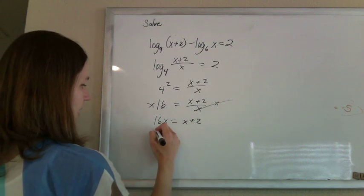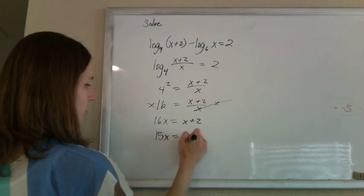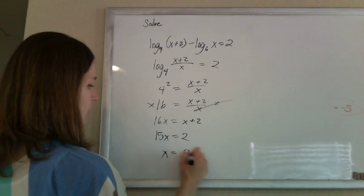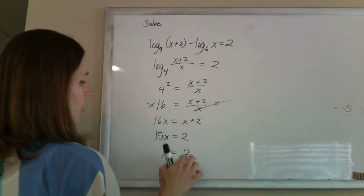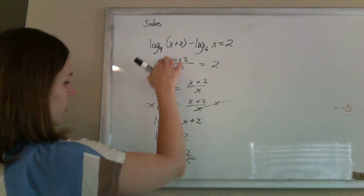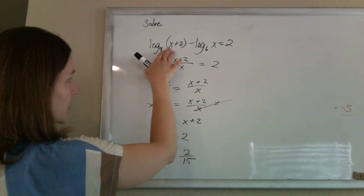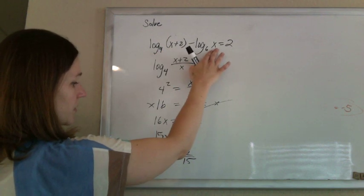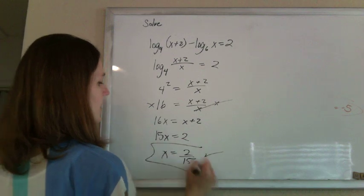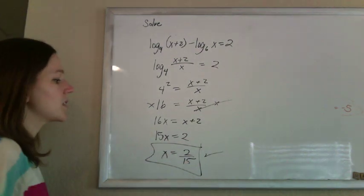Now just subtract an x. So 15x will equal 2. Divide by 15, so x will be 2 fifteenths. Check this to make sure it's not extraneous. Can't take the log of a negative number, but 2 fifteenths plus 2 will be positive, and 2 fifteenths is positive. So it checks out, and x equals 2 fifteenths is our answer.